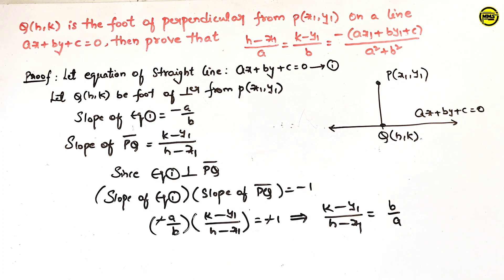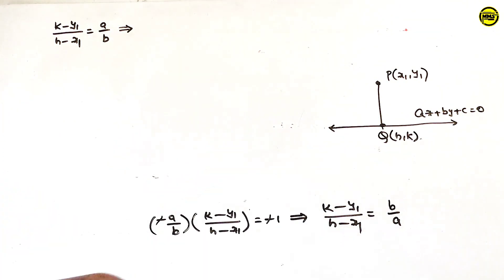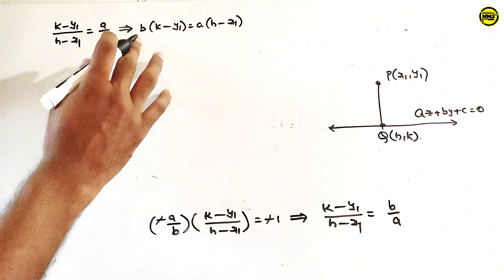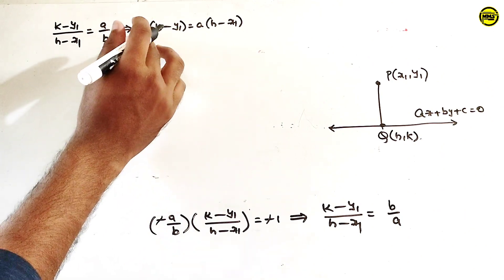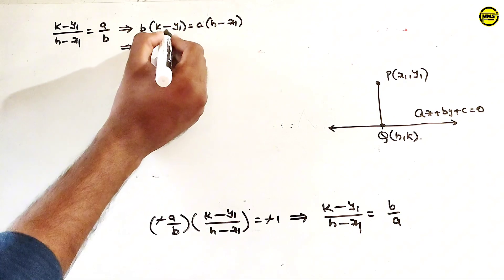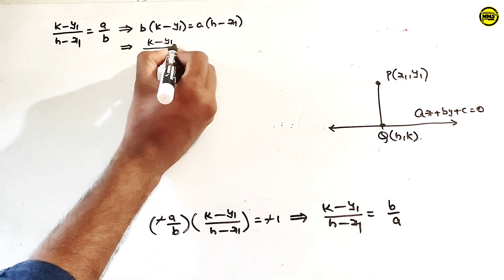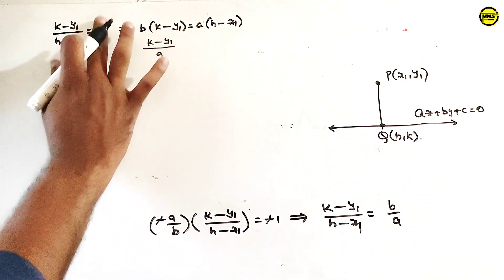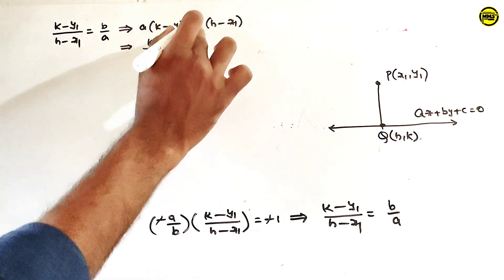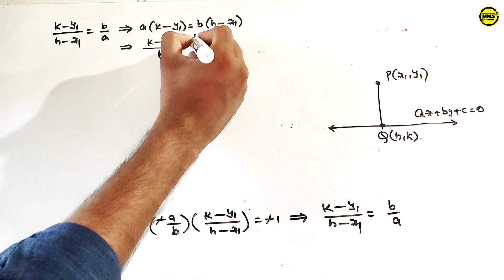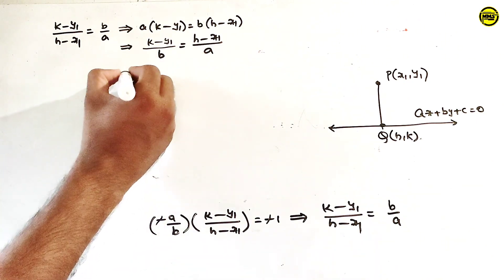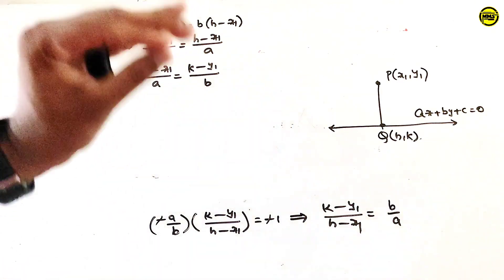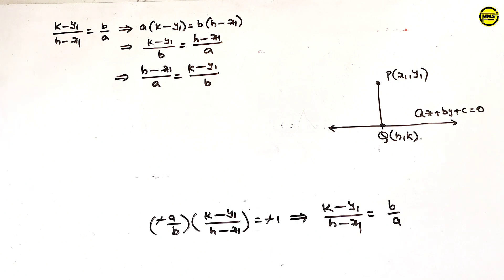Same to same. Next, by cross multiplication, we can adjust. This gives b into (k minus y1) is equal to a into (h minus x1). It is a transposition. So h minus x1 over a is equal to k minus y1 over b. This is the model.